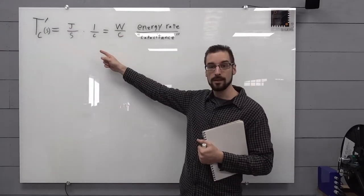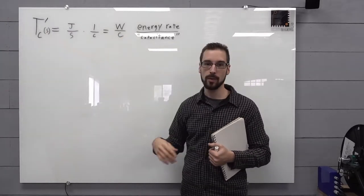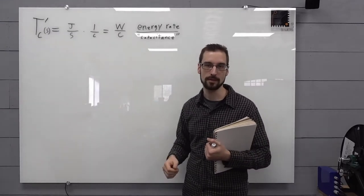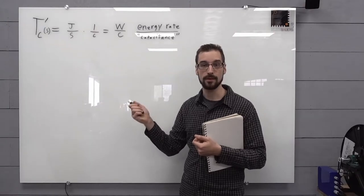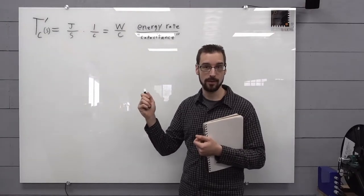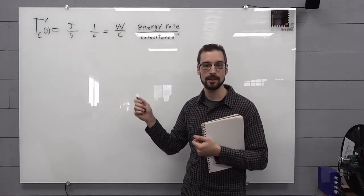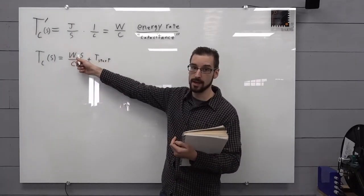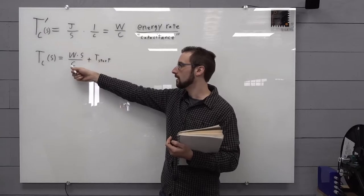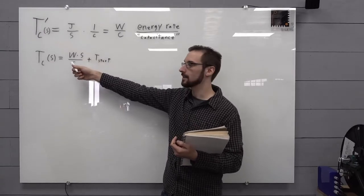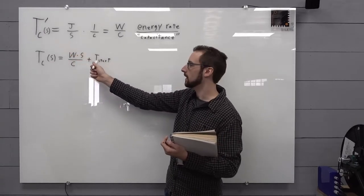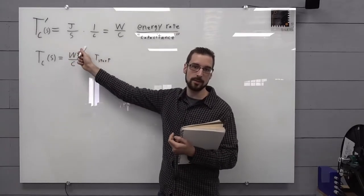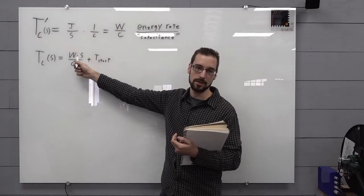But we don't really want the rate of change of temperature. We want to know the actual temperature, or our predicted temperature for the future. So we'll use calculus to integrate and get the function that represents the temperature, given the time. And there it is. This is wattage times time, which ends up being energy, over the capacitance, which gives us a temperature, plus the starting temperature. So if we had a constant wattage, then this equation would give us the temperature given time.